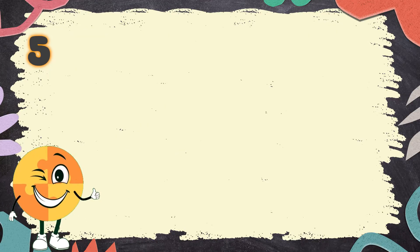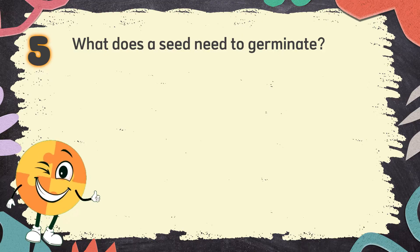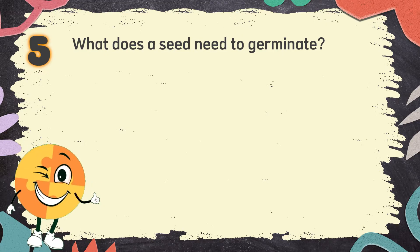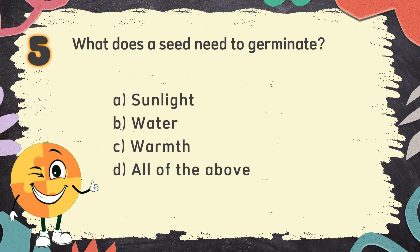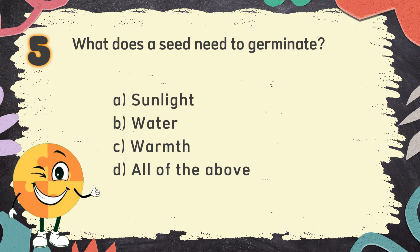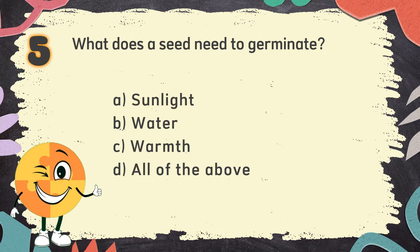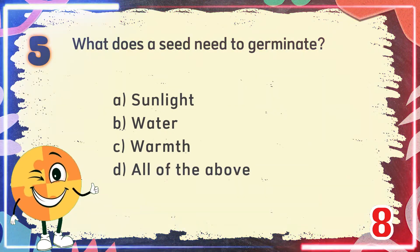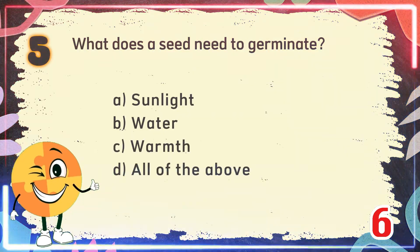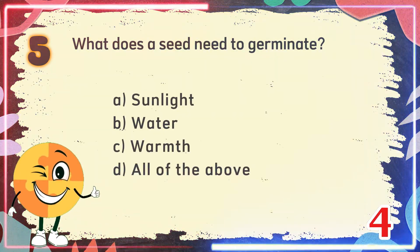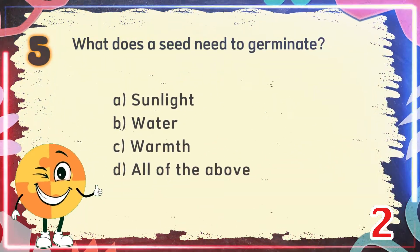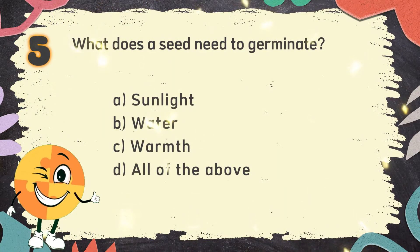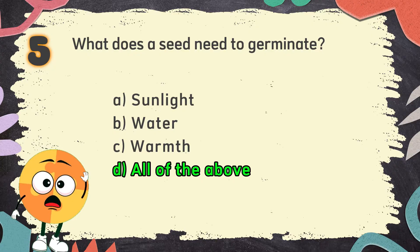Number 5: What does a seed need to germinate? The choices are: A. Sunlight, B. Water, C. Warmth, D. All of the above. The correct answer is D. All of the above.